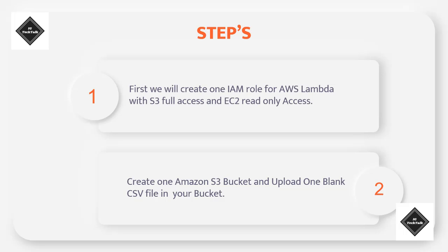So these are the steps we will perform. First, we will create one IAM role for AWS Lambda with S3 full access and EC2 read-only access. We will give S3 full access because our Lambda function is going to read and write a CSV file. We will give EC2 read-only access because our Lambda function is going to read which instances are in running state, and this role we will attach to our Lambda.